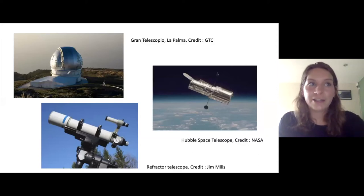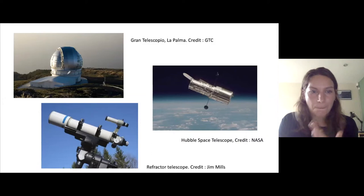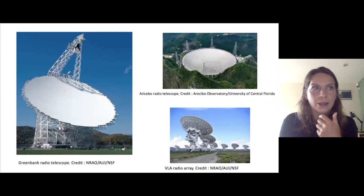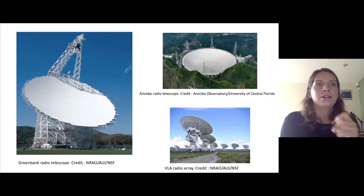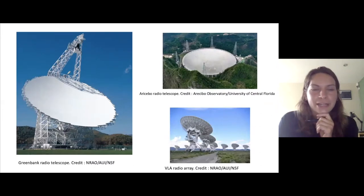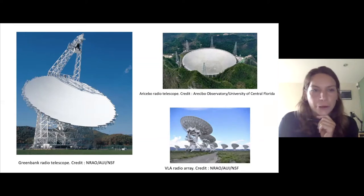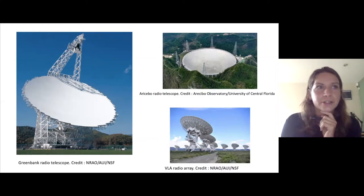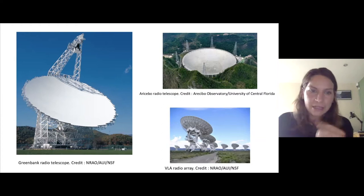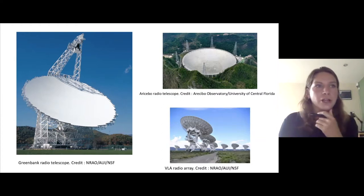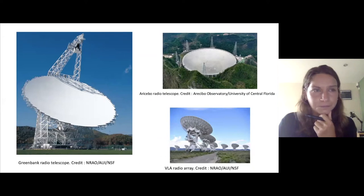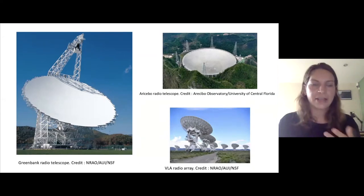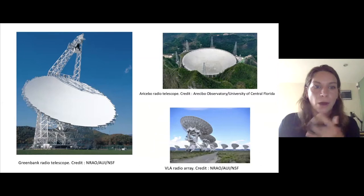A radio telescope needs a much, much larger diameter. The largest fully steerable radio telescope is the Green Bank Telescope in West Virginia, America, with a diameter of 100 metres across. By fully steerable, I mean you can move it in different directions across the sky. That's the largest steerable dish we have so far — 100 metres — which is not quite the 10,000 times larger we'd need compared to optical.